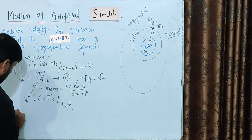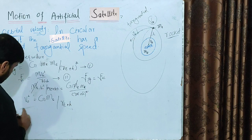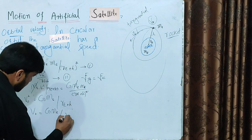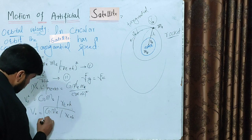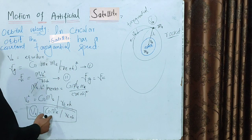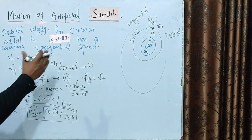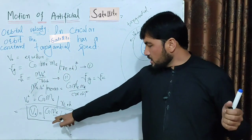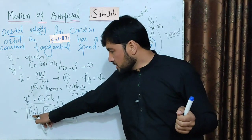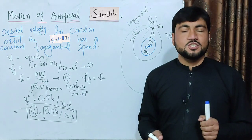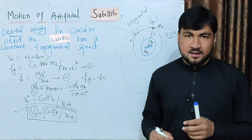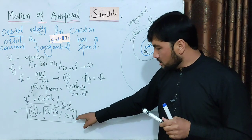Taking the square root, we get the final equation: v₀ = √(G × M_e / (R_e + h)). This means that the orbital velocity depends only on the mass of the Earth and the distance (R_e + h) from Earth's center. It does not depend on the mass of the satellite. Different planets at the same orbital distance would have different orbital velocities.